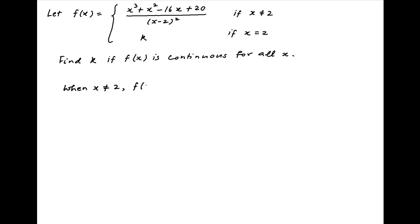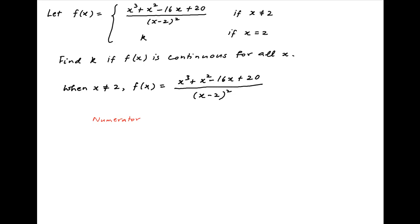We are given that when x is not equal to 2, f(x) is equal to (x³ + x² − 16x + 20) divided by (x − 2)². The value of the numerator when x is equal to 2 is equal to 8 + 4 − 32 + 20, which is equal to 0.